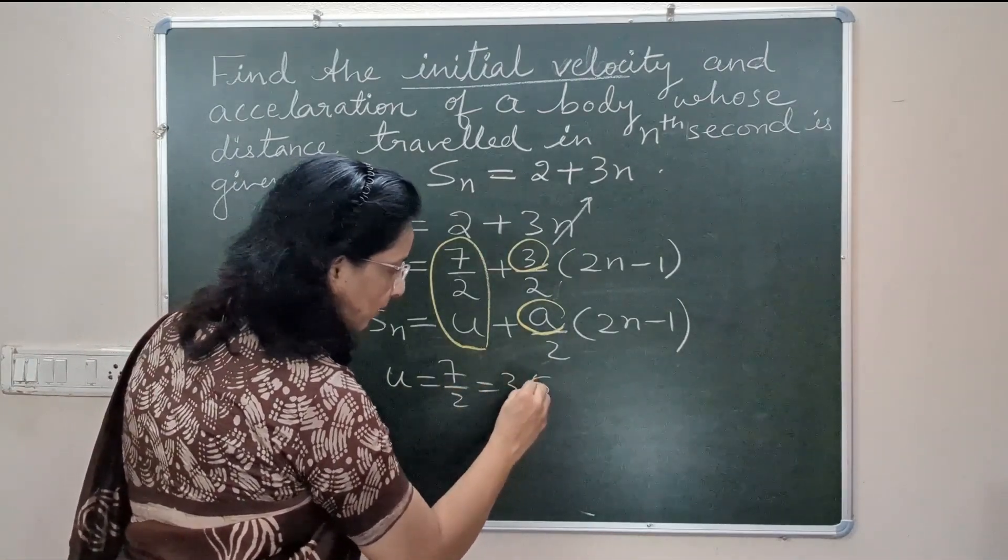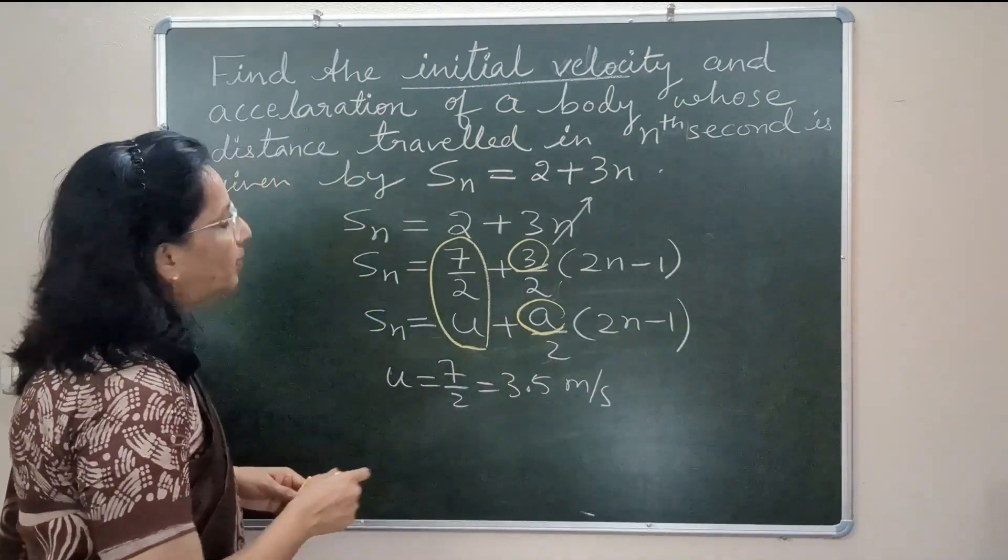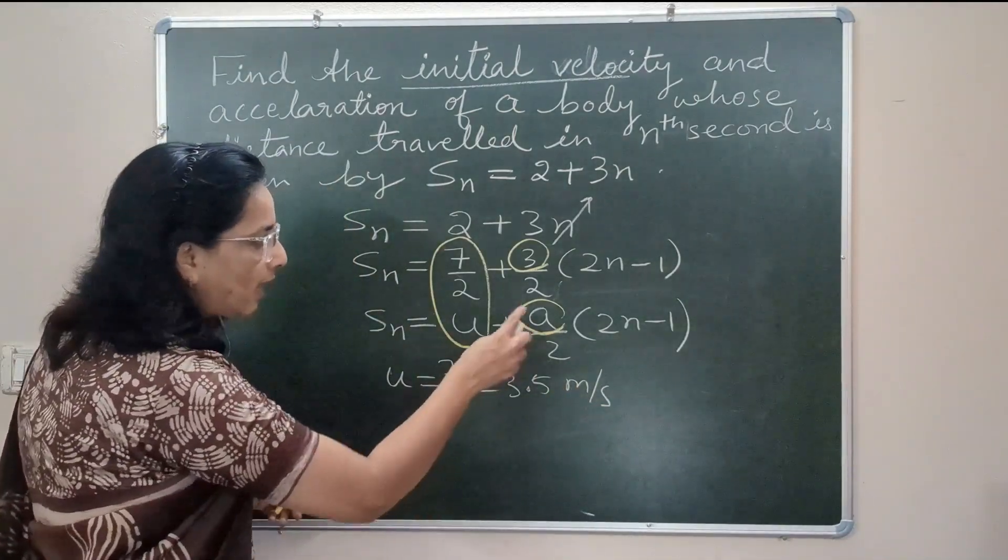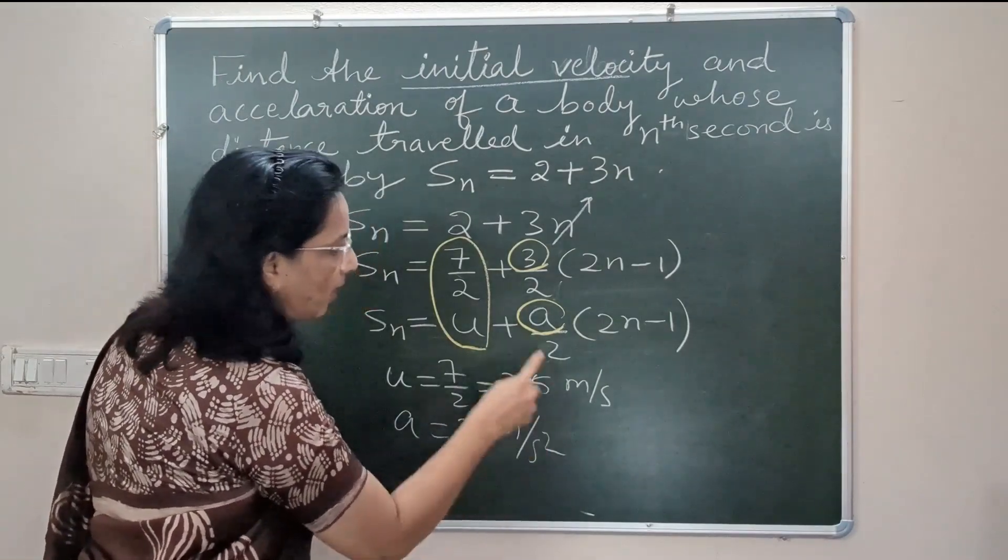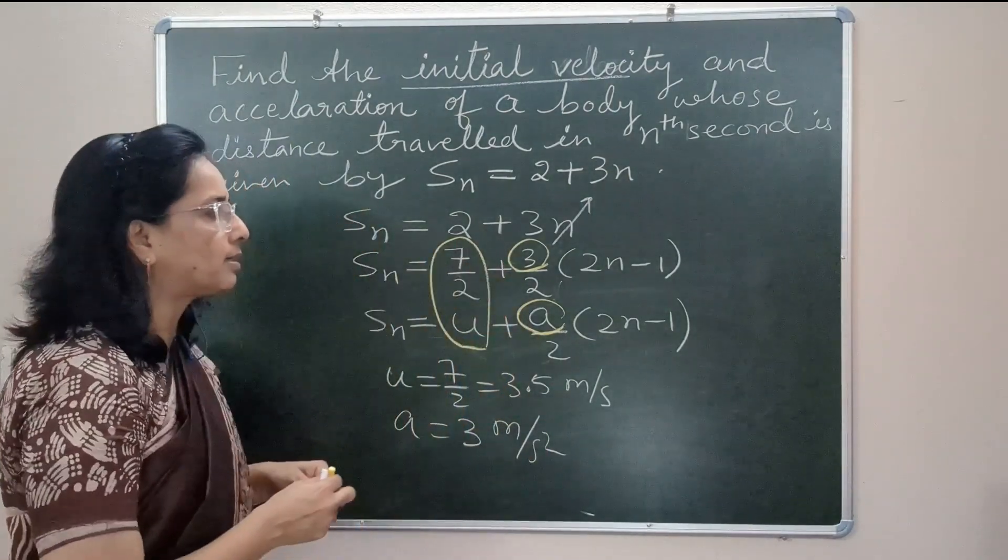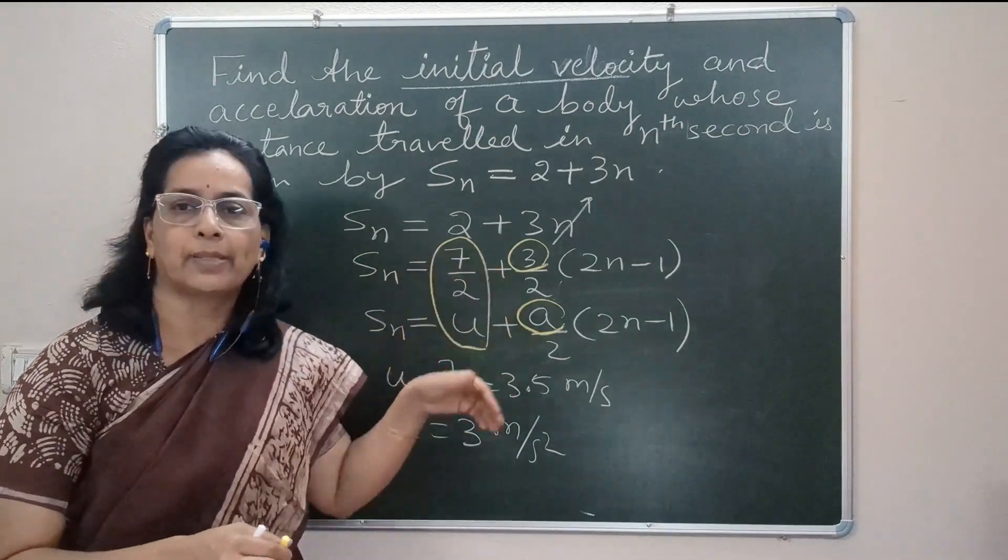So the initial velocity u is 7/2, which is 3.5 meter per second, say for example if it is in this unit, and acceleration is 3 meter per second square, on comparing term by term of this expression.